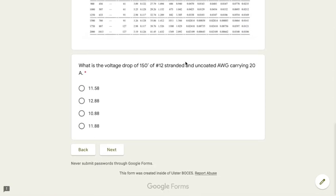The first thing I want to look at is this question that you got wrong. It says, what is the voltage drop of 150 feet of number 12 stranded and uncoated American wire gauge carrying 20 amps?